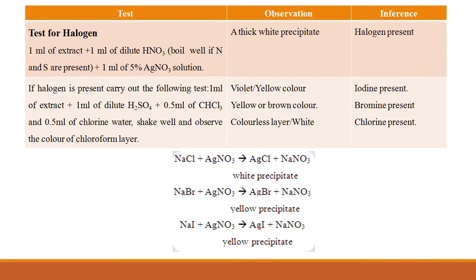Test for halogen: take sodium fusion extract plus 1 ml of dilute nitric acid (boil if nitrogen and sulfur are present), then add 1 ml of 5% silver nitrate solution. A thick white precipitate confirms halogen is present. To determine which halogen: take the extract with dilute sulfuric acid, add 0.5 ml of chloroform and 0.5 ml of chlorine water, shake well, and observe the chloroform layer color. Yellow to violet color confirms iodine; yellow to brown confirms bromine; colorless or white chloroform layer confirms chlorine.